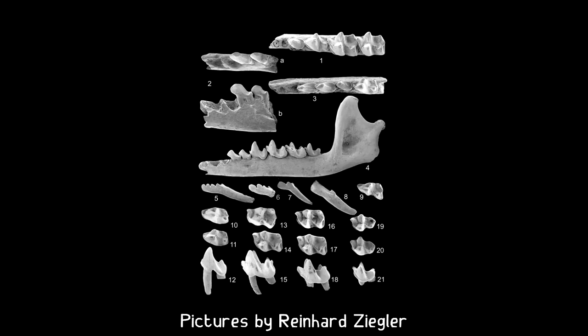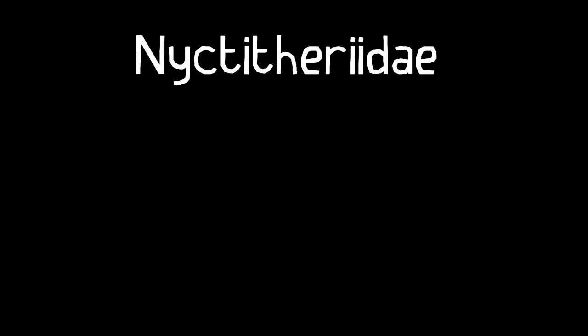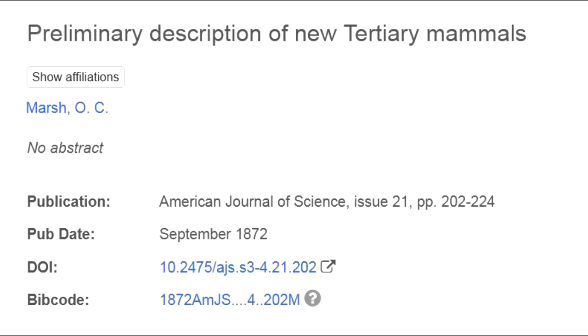First of all, this picture does not show a scientific reconstruction of a nyctythereid. This is because the extinct mammalian family of the Nyctytheriidae is mainly just known from fossilized teeth. The word Nyctytheriidae derives from the Greek words 'nycty', which means related to night, and 'therion', which means wild animal.